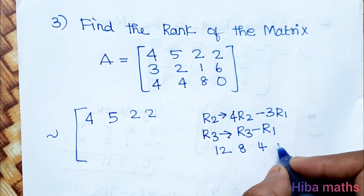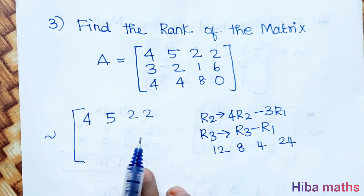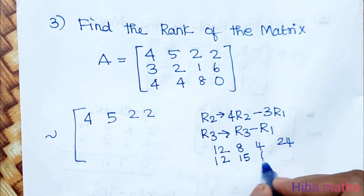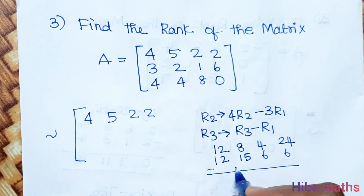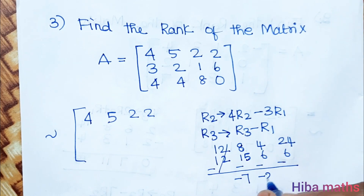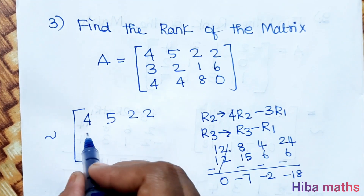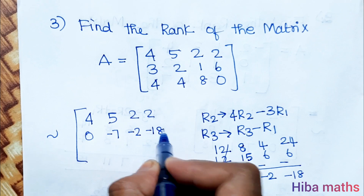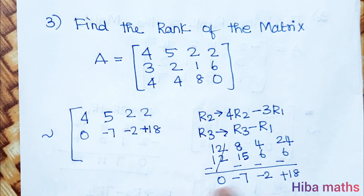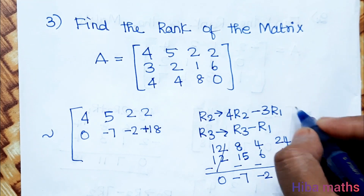Applying the operations on R2: 4×R2 minus 3×R1. Computing: 8 minus 15 is -7, 4 minus 6 is -2, 6 minus 4 is... results in [0, -7, -2, -18]. For R3 minus R1 direct: 0, minus 1, 6, minus 2 gives [0, -1, 6, -2]. Then applying plus 18 adjustment: result confirmed.